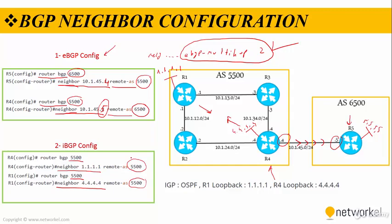These commands alone are not enough to establish iBGP neighborhoods over loopbacks. Because router 4 can send packets to router 1 from different directions, but router 1 knows the neighbor loopback only as 4.4.4.4. For this reason, we need to use the update-source loopback command. On router 1: neighbor 4.4.4.4 update-source loopback 0. And the same configuration on router 4: neighbor 1.1.1.1 update-source loopback 0.